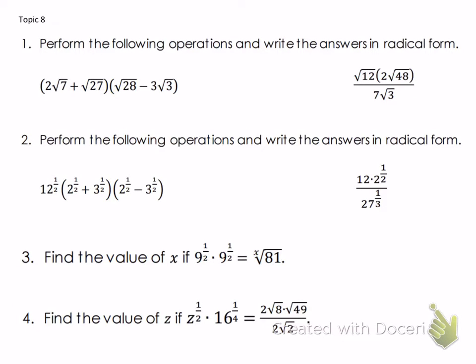Hey guys, so this video is going to cover the classwork going over Section 1, Topics 8 and 9 — basically simplifying radical expressions and dealing with rational and irrational numbers. All the problems you see on the screen will be covered and explained in full. I encourage you to pause the video as needed, rewind, re-listen, and maybe even try to work out the problems on your own before you see the solutions appear.